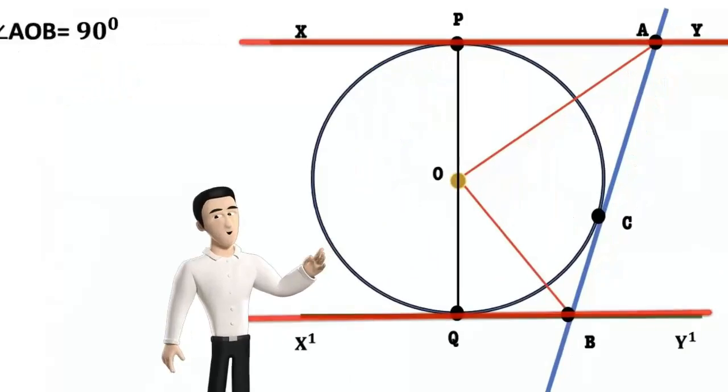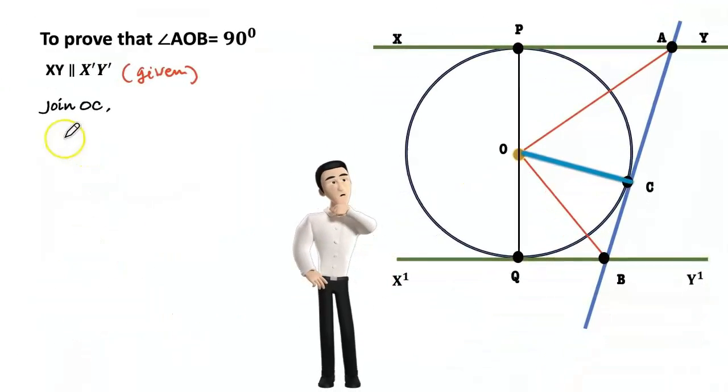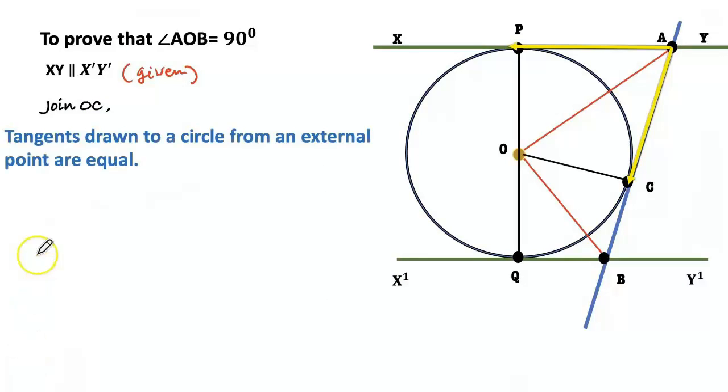Join OC. We know that tangents drawn to a circle from an external point are equal. Therefore AP equals AC.